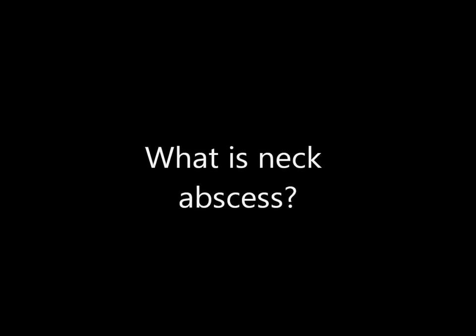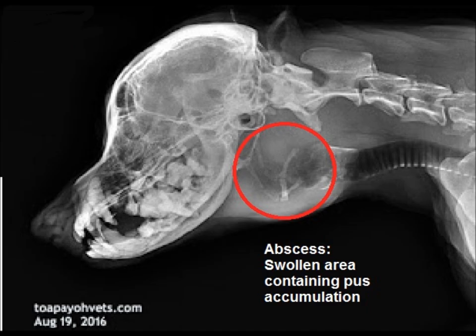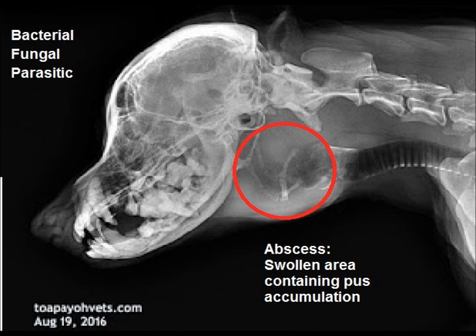Let us understand what exactly is a neck abscess. A neck abscess is a swollen area containing pus accumulation around the neck of the dog. It can be caused by bacterial, fungal, parasitic, or other reasons.